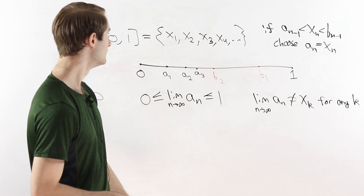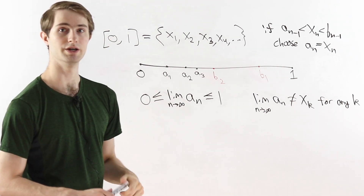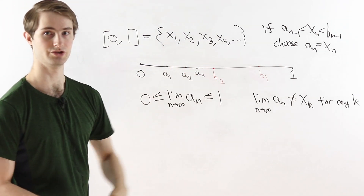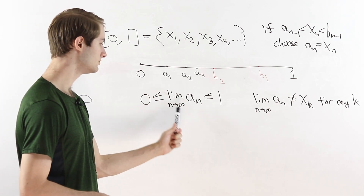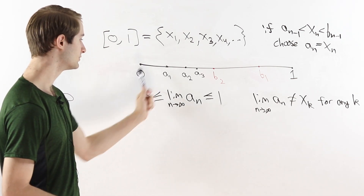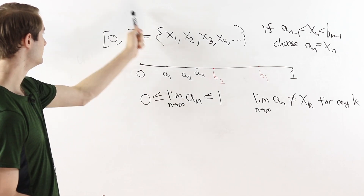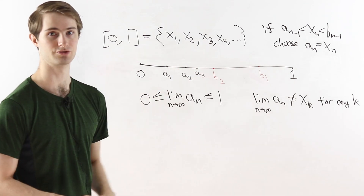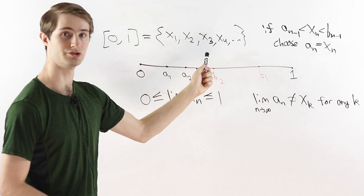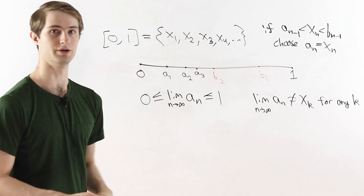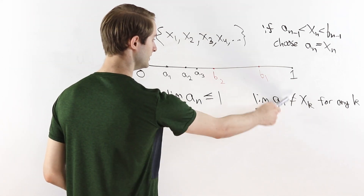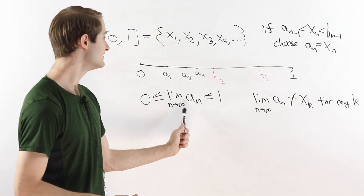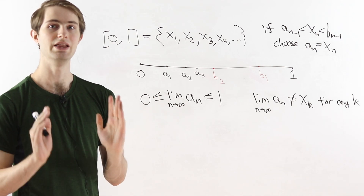We know that the entire interval from 0 to 1, under our assumption, is contained in this list x1, x2, x3, x4, and so on. We proved earlier that the limit of A_n is some number between 0 and 1, so it must appear in the list. If we can prove that this limit doesn't equal any number in the list, then the limit would not be a number between 0 and 1, giving us our contradiction.